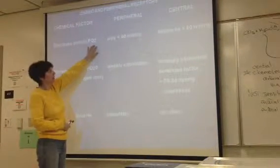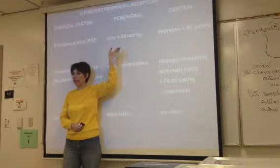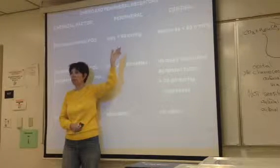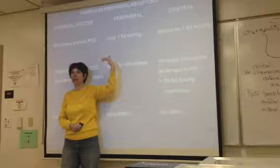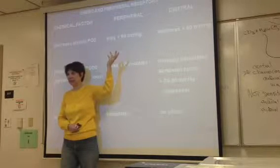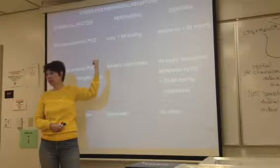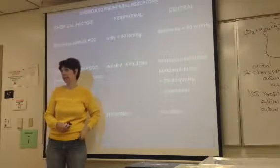So if it is a drop in PO2, that's only going to affect your respiratory rate if it's less than 60. Remember, normal blood coming into the lungs is a PO2 of 40. But that's the venous level. So if we're at high altitude and our PO2 drops below 60, then that can be a stimulus to breathe.